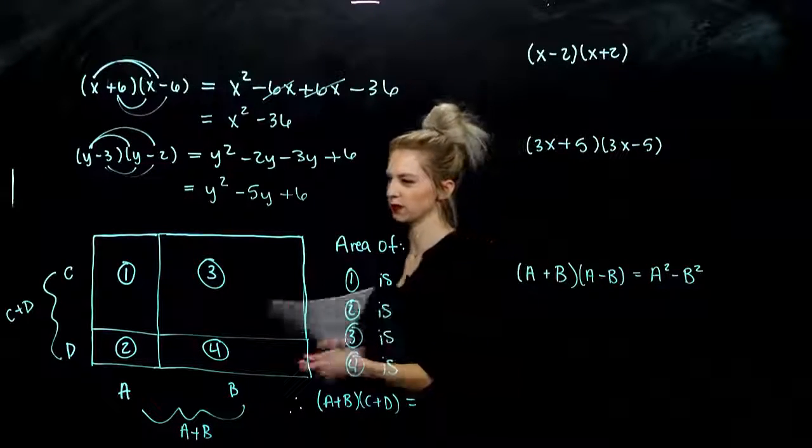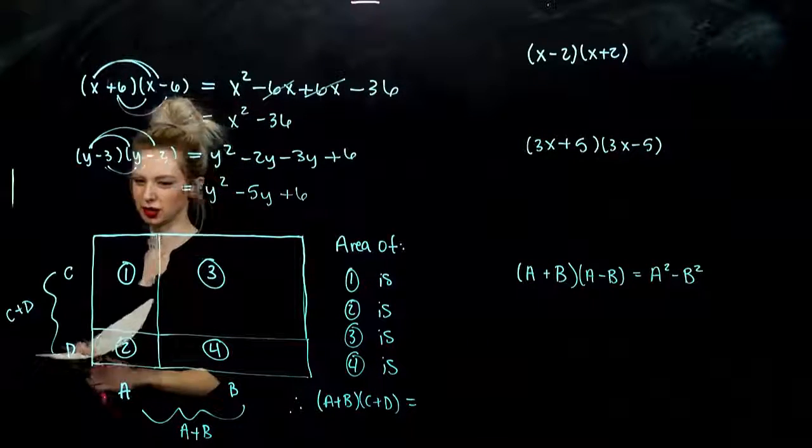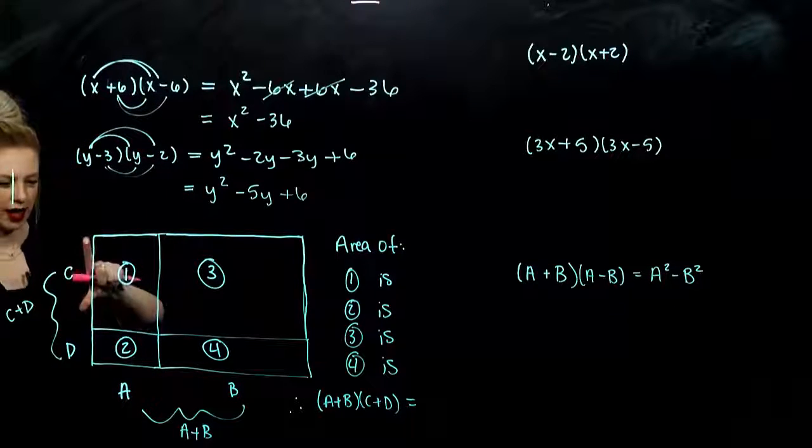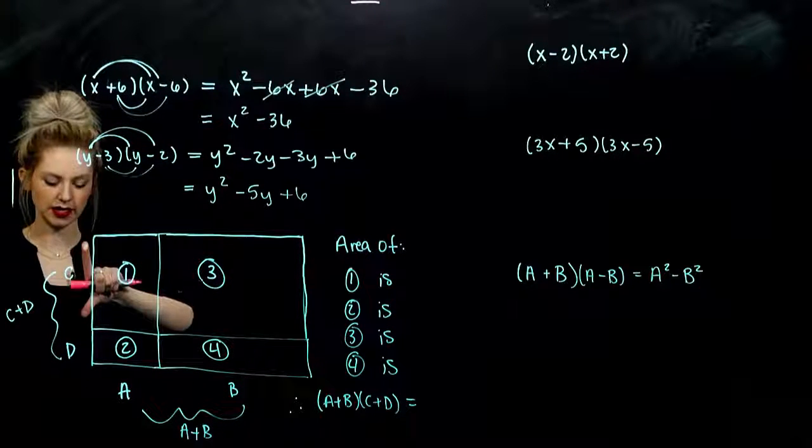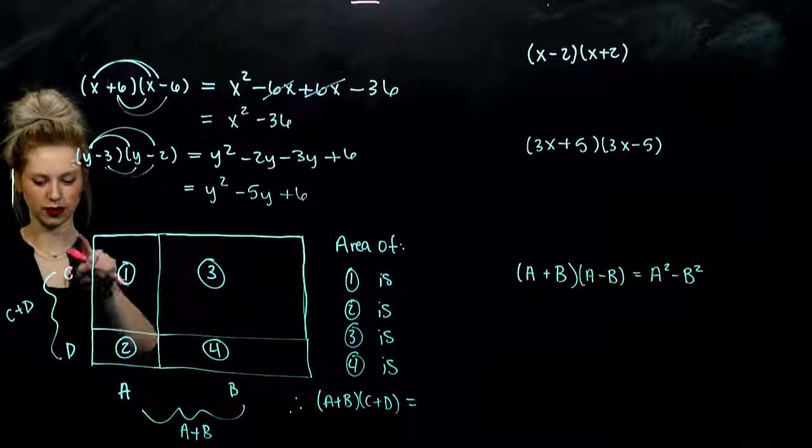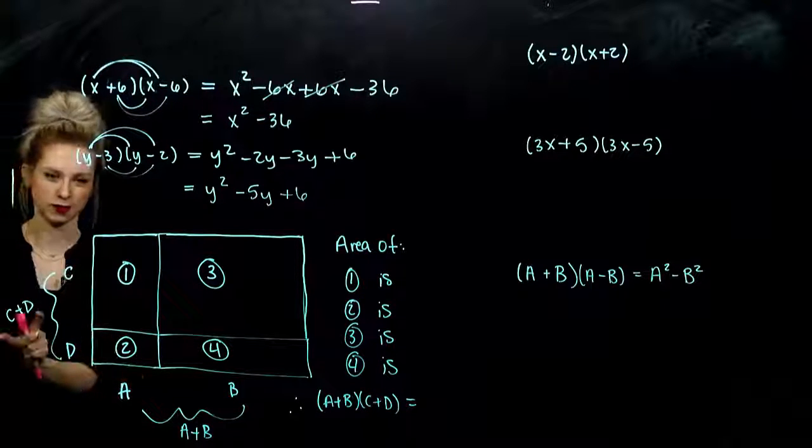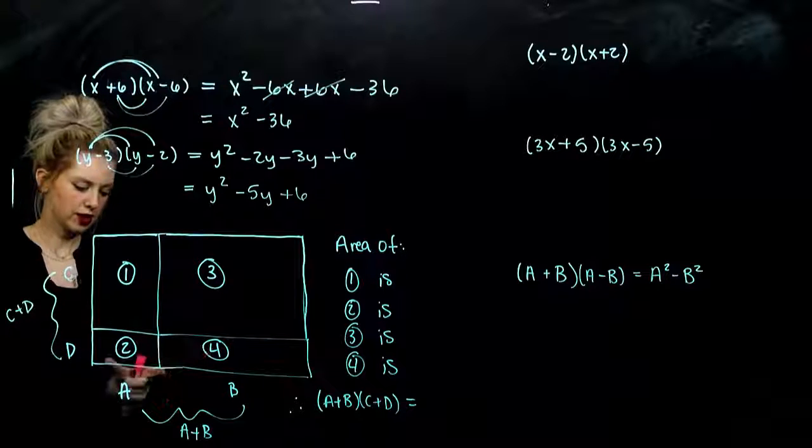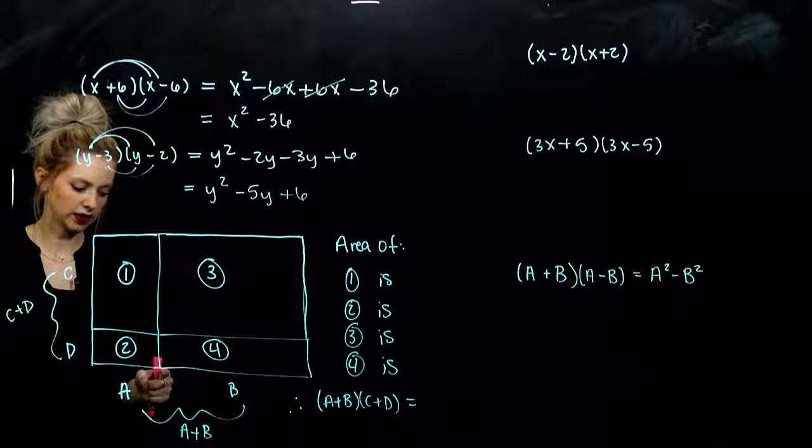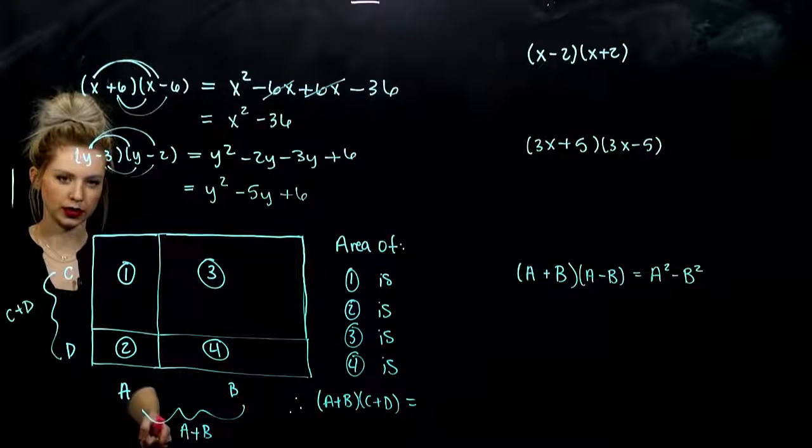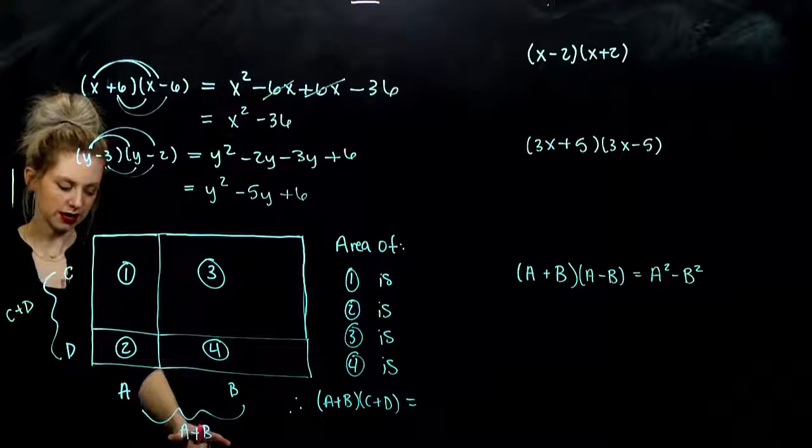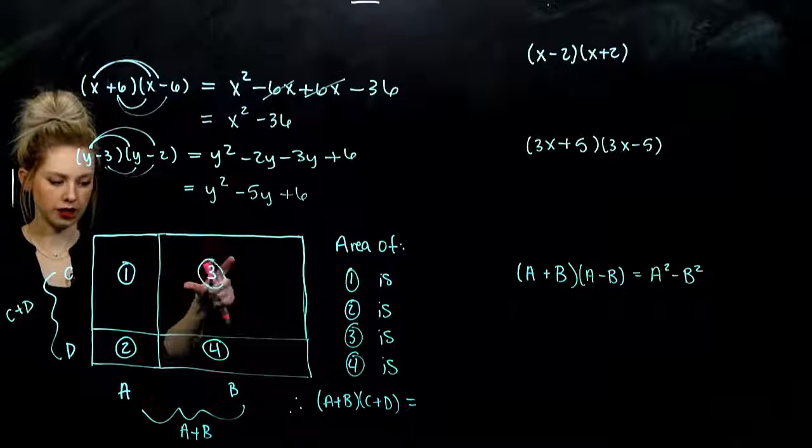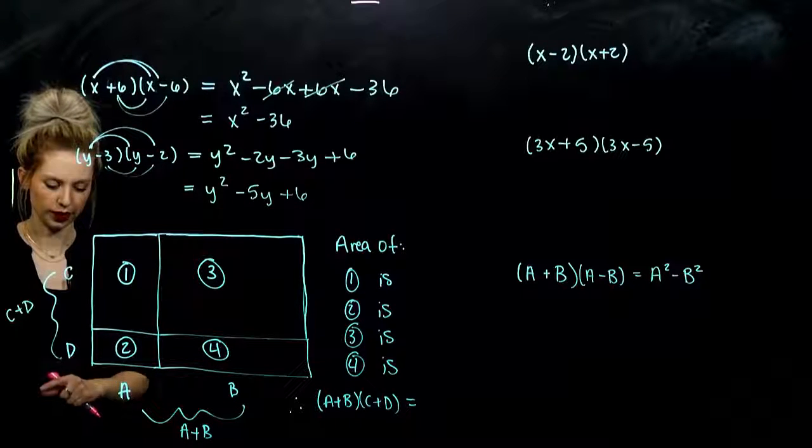So we're going to go back to this FOIL method and look at it geometrically. Again, I have a rectangle with a bunch of small ones on the inside. This length is C. This length is D. So together, the length of this side is C plus D. And over here, this length is A. This large length is B. So if I add those together, I'm looking at A plus B. So we're going to look at the product and we're going to examine the area of each of these individual little rectangles.